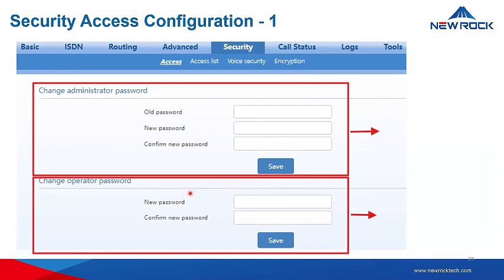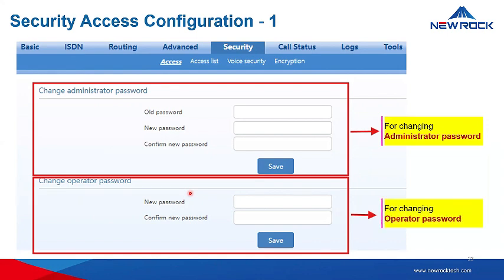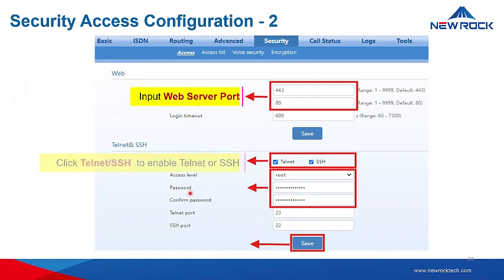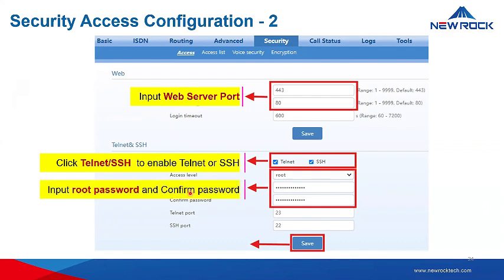Security access is strongly recommended to prevent illegal access to the device. You need to change the administrator password and the operator password. We advise regularly changing the admin and operator passwords for the web GUI. You can also change the HTTP server port, and enable or disable SSH and Telnet access, including changing the Telnet port. Then input and confirm the password and click save.